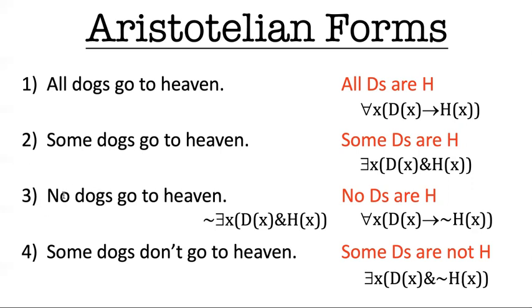Now, let me comment, number three, no dogs go to heaven, I think is the least intuitive of all of these. It's the hardest one for people to remember. And let me tell you, there's actually two good ways of translating it. So you can translate it with wide scope negation or with a wide scope universal quantifier.